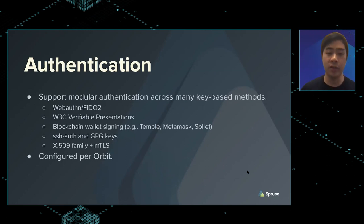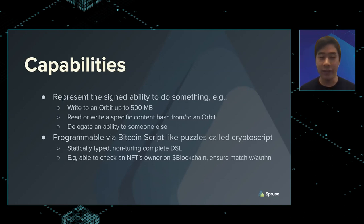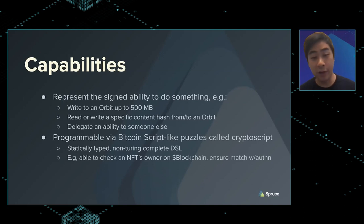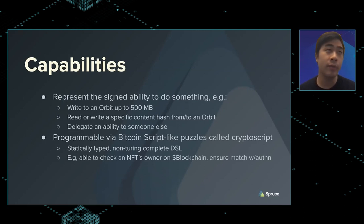These are the different ways that people can identify themselves — they're all key-based, using public and private key pairs. A capability is the ability to do something like write to an orbit up to 500 megabytes. Maybe someone wants to give you a file — you can give them a capability and they can write to your orbit within the scope of that capability, or read/write a specific content hash, or delegate that ability to someone else. We wanted capabilities to be secure, expressive, and useful.